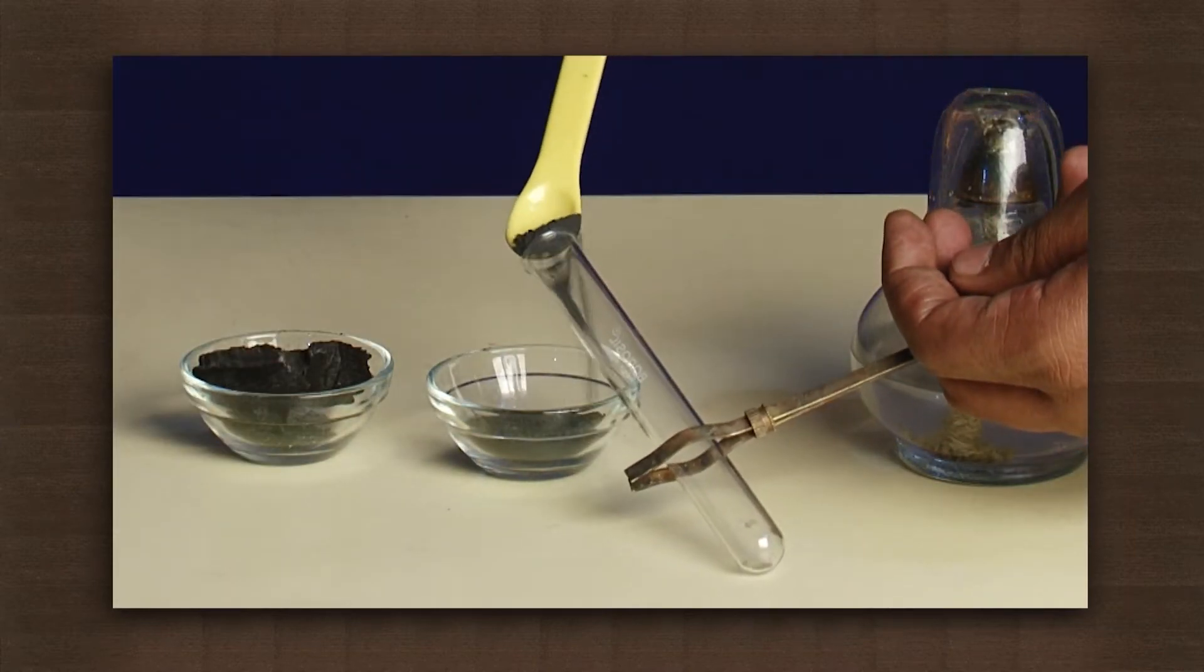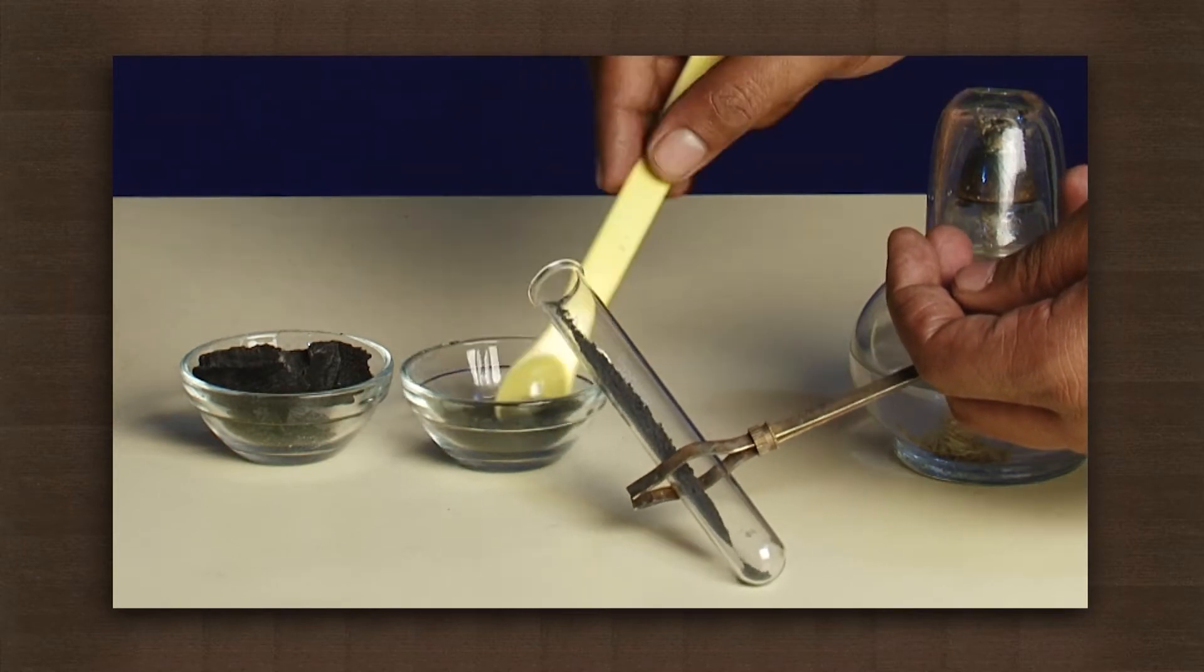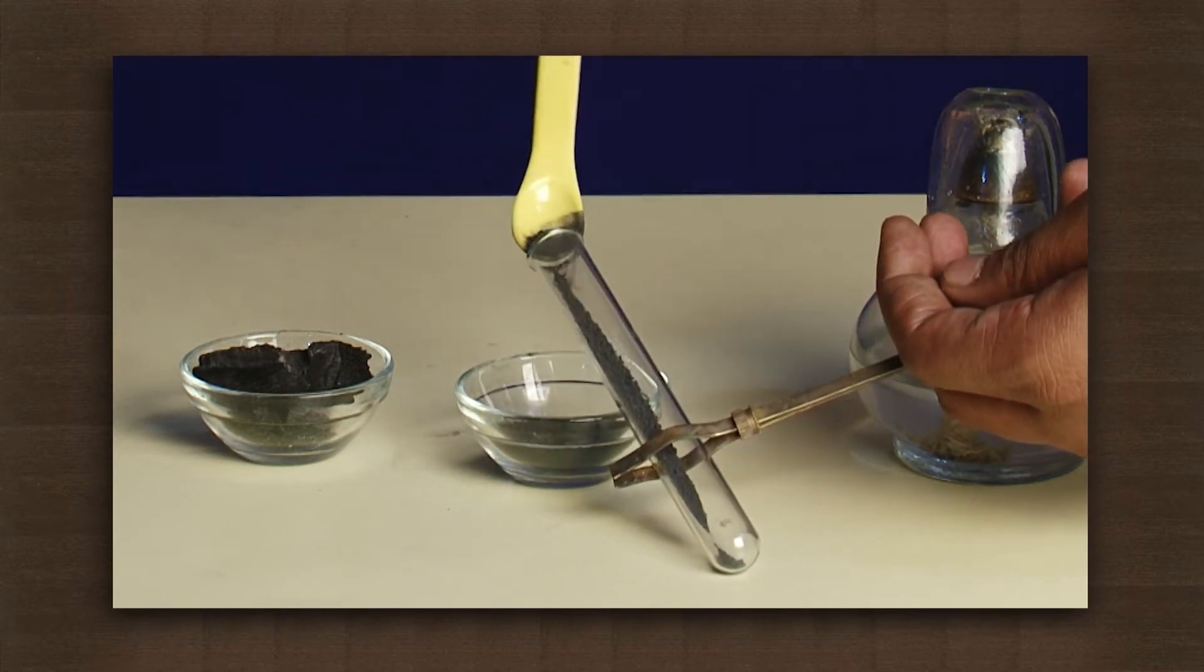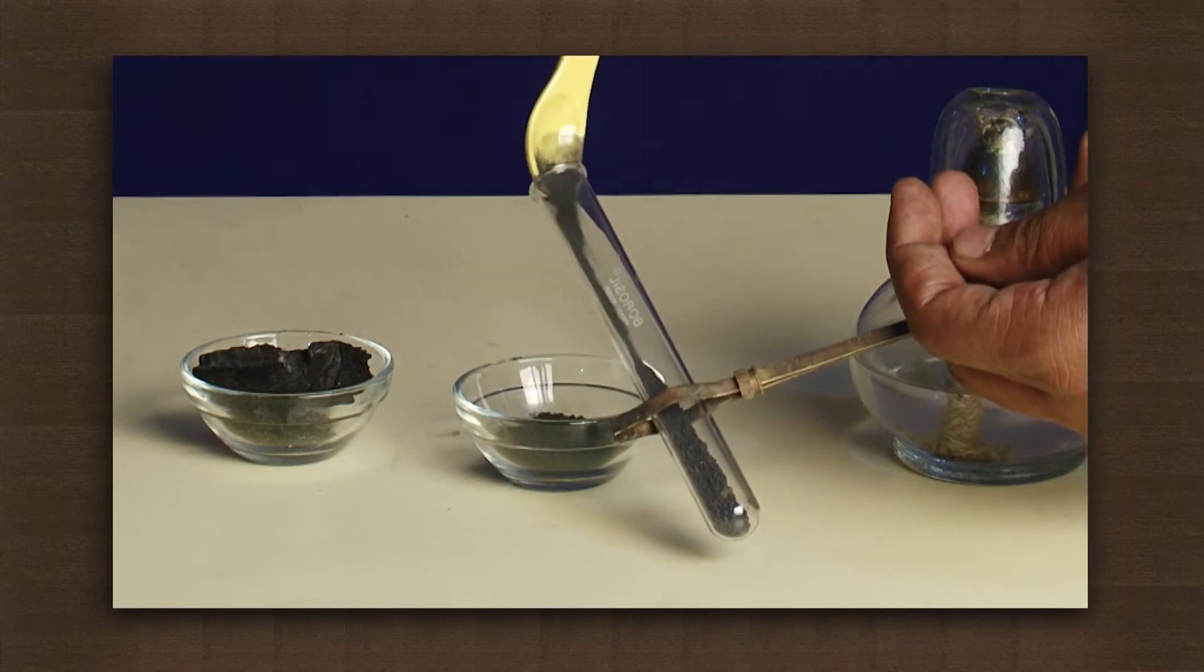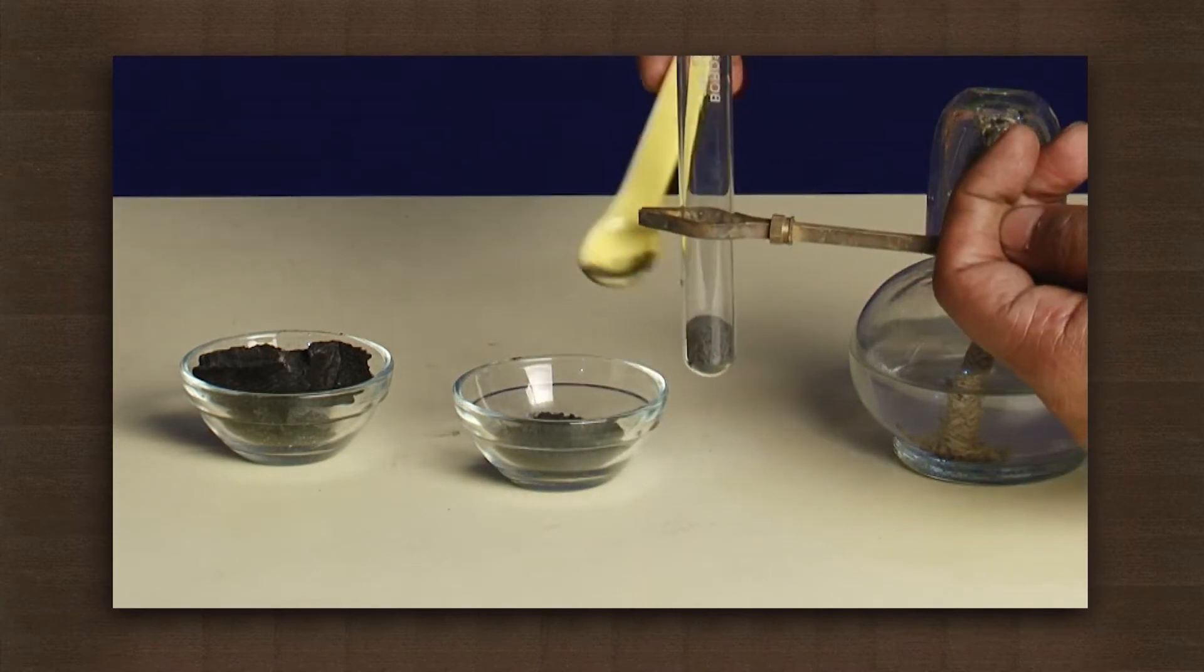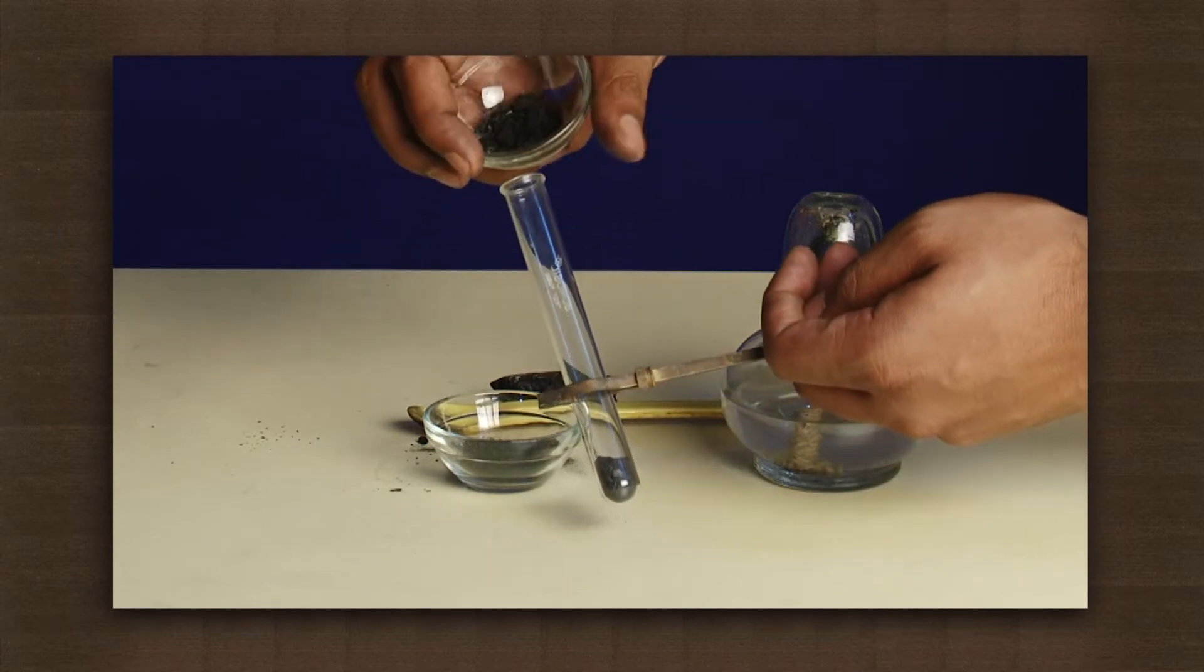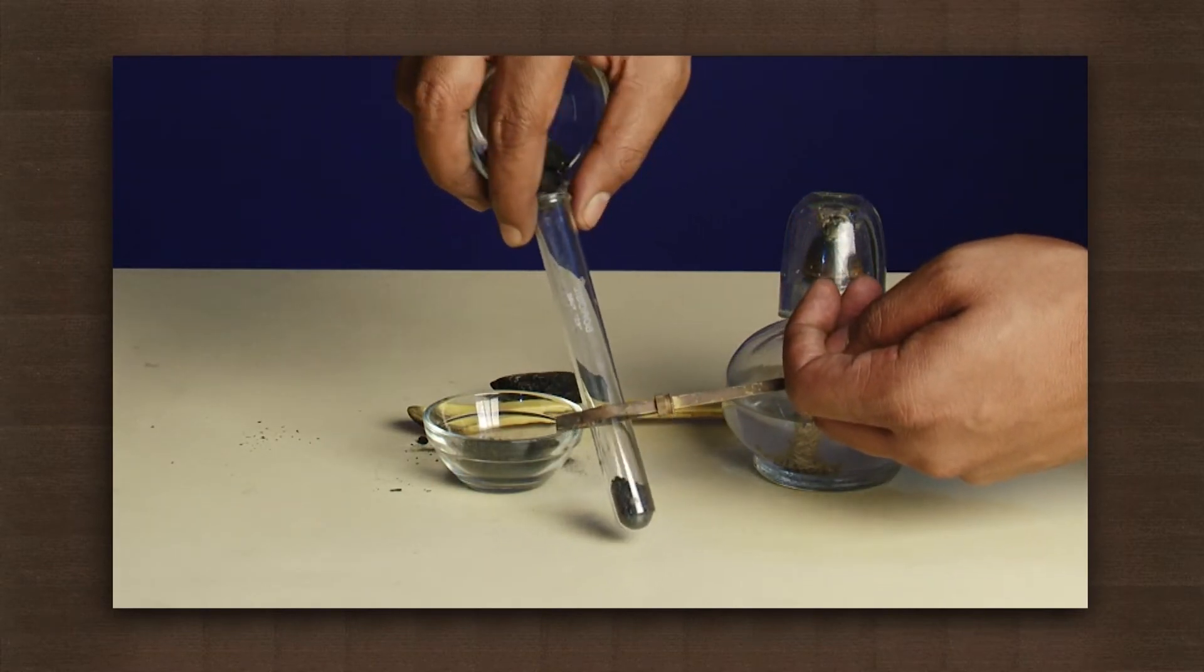Put some copper oxide in the test tube. Now add some charcoal powder on top of the copper oxide without any mixing.